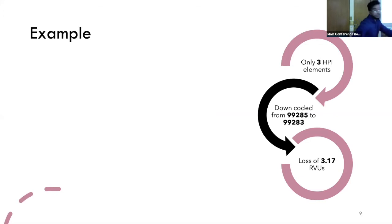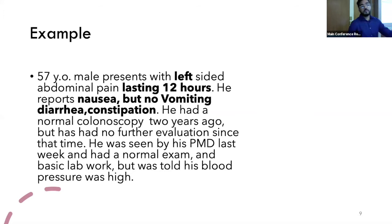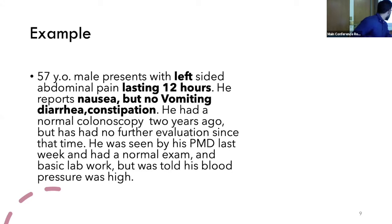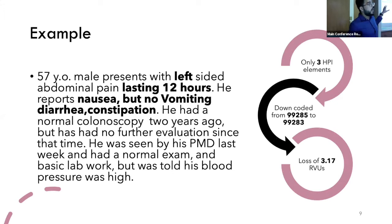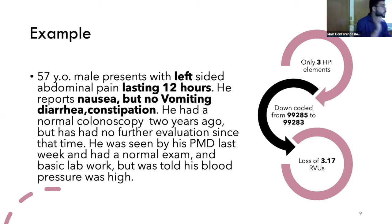Here's an example of a patient admitted as a case of bleeding diabetic colitis. He's a 57-year-old gentleman who presented with left-sided abdominal pain lasting 24 hours. He has nausea, no vomiting, diarrhea or constipation. He mentioned he had a colonoscopy two years ago and was evaluated by his doctor. In this case, the HPI was written and it got downgraded from a 99285 code to a 99283 code because it only had three elements in the HPI. That led to a loss of 3.17 RVUs.